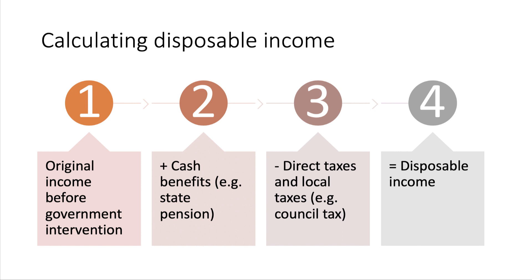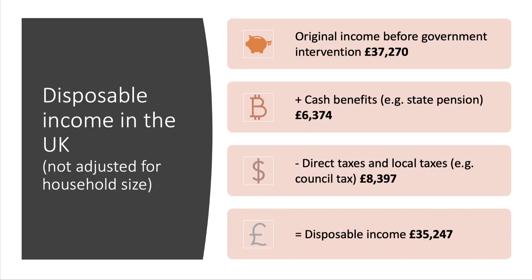That gives us a measure of disposable income — a figure that economists pay a lot of attention to. Effectively, it's the money we have left in our pockets available to spend and save after the government has had its impact within the circular flow model.